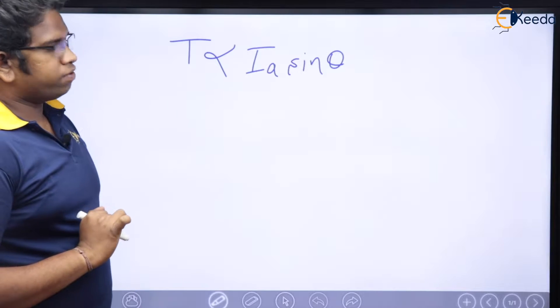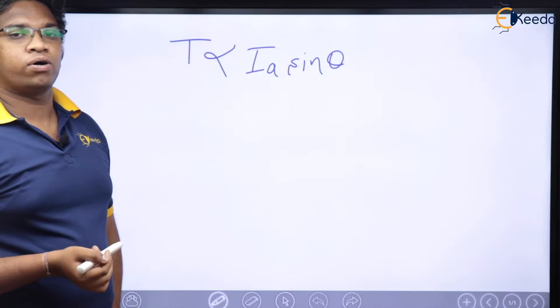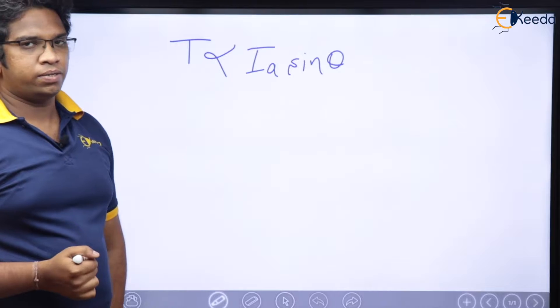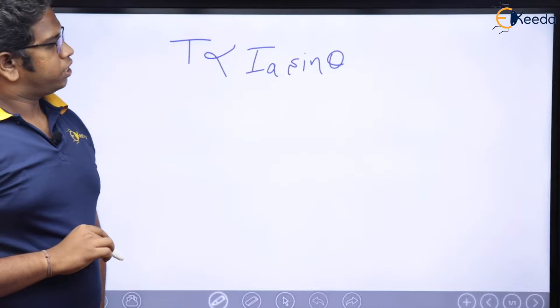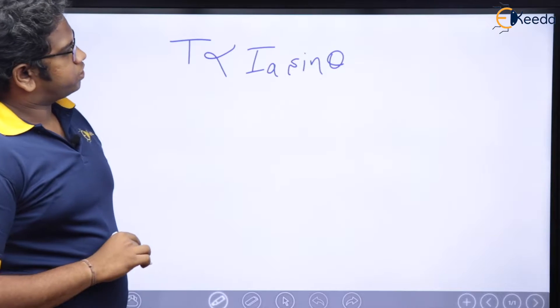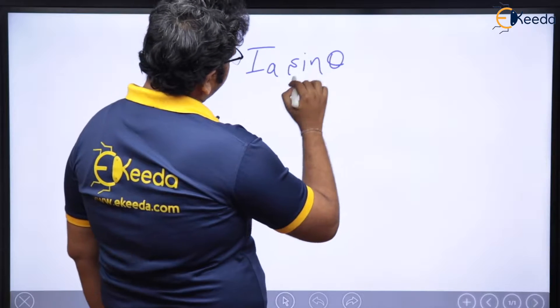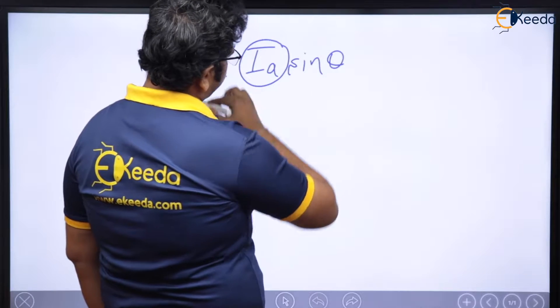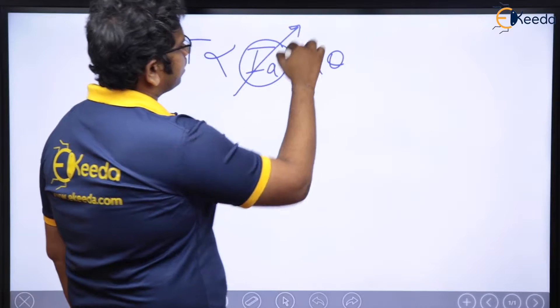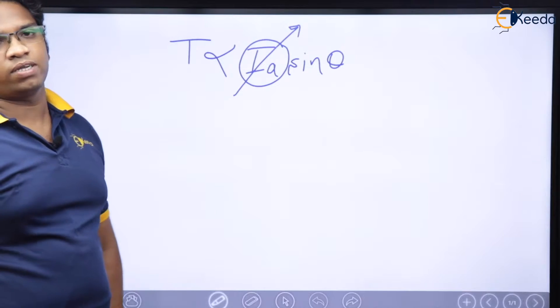Now we have seen different things like 3 pulse, 6 pulse and all. If you think of this Ia, can I vary this Ia? Definitely, I can vary this Ia.